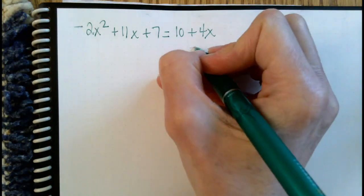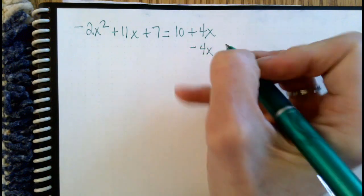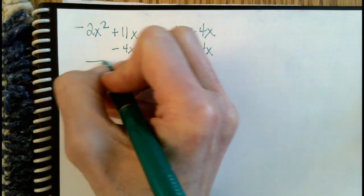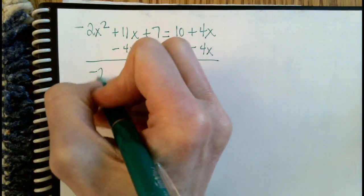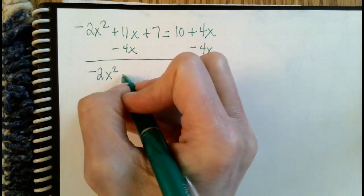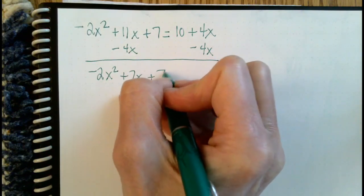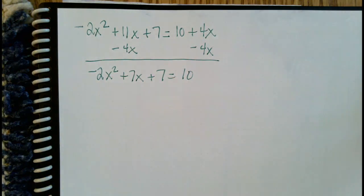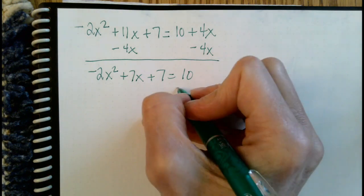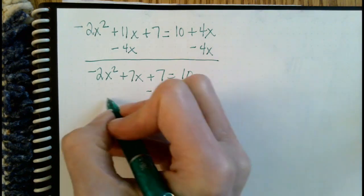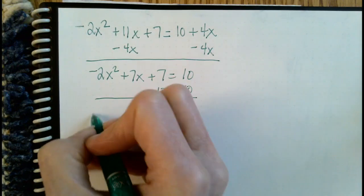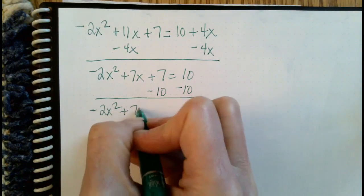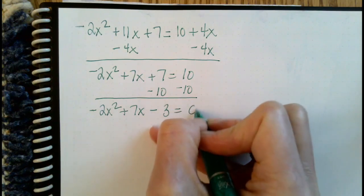I'm going to start by moving the 4x from the right side to the left side of the equation. So we have negative 2x squared plus 7x plus 7 equals 10. When we're solving whether it's quadratic formula or factoring, we need to have the equation set equal to zero, so we subtract 10 from both sides. We get negative 2x squared plus 7x minus 3 equals zero.